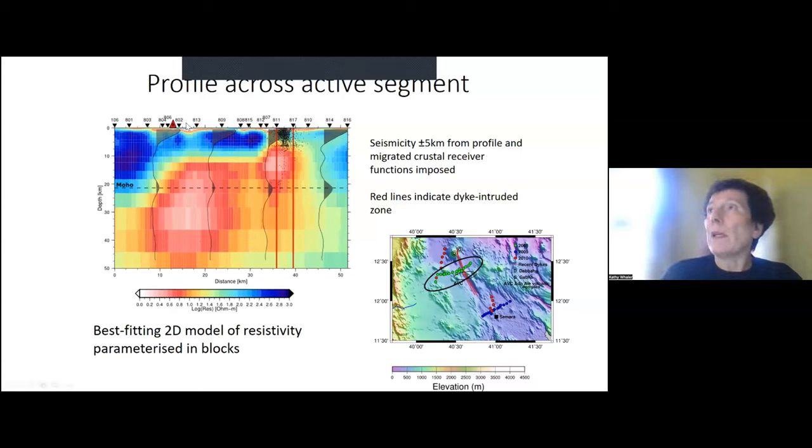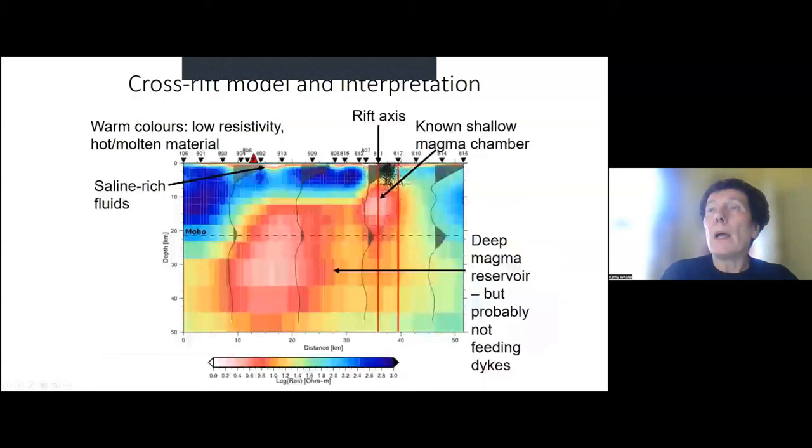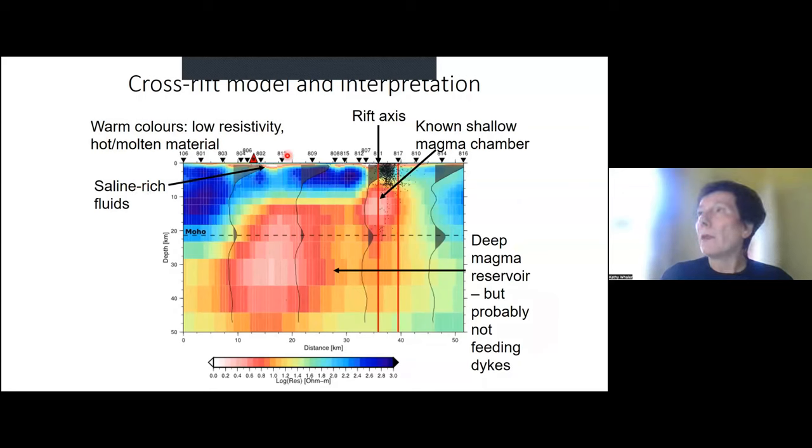And you'll also see that the receiver functions here migrated onto the profile, where you can see very strong receiver functions here, and much weaker ones here, where our colors are warmer. But this is now the best fitting two-dimensional model of resistivity, parameterized into blocks. And you can see how the resolution of the data changes with depth. We need very small blocks near the surface, but they're much broader at depth there. So the cross-rift model and interpretation. Remember, in all of my figures, warm colors are low resistivity, and that will tend to be hot or molten material or potentially saline-filled fluids, as is interpreted at the surface here.